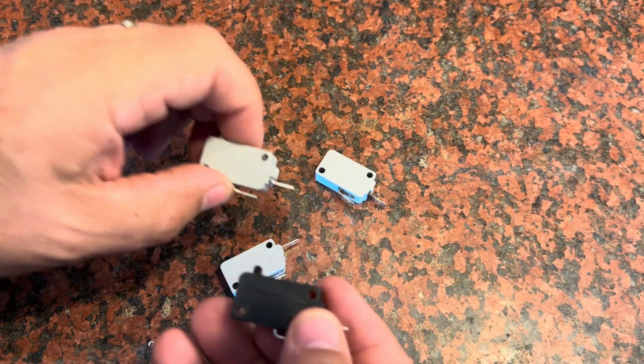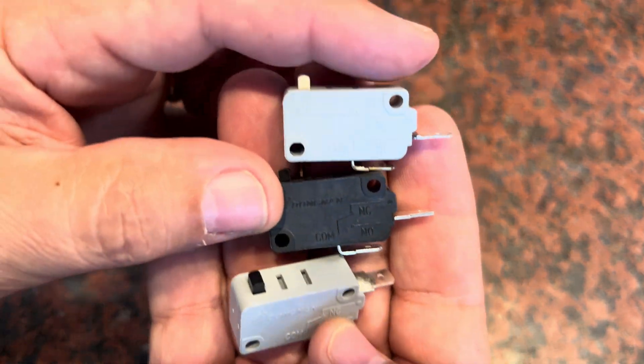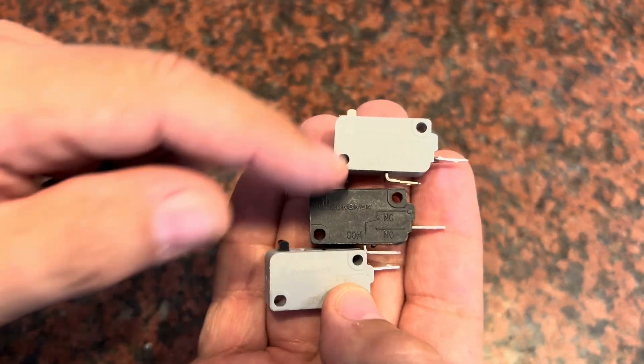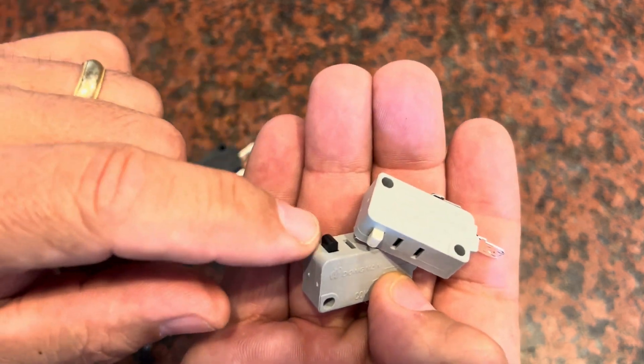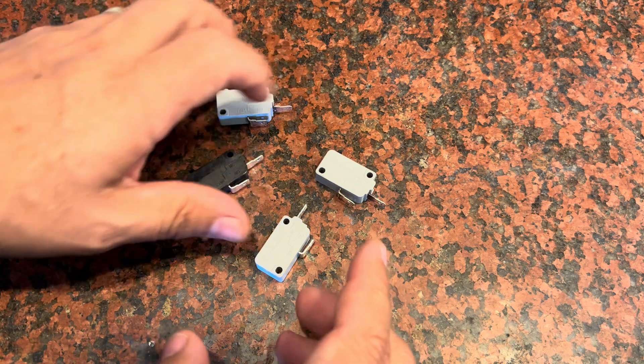But when you're replacing these sometimes it can be a little unclear so what am I dealing with, what am I replacing. You can see with these three here this one's black, these are gray. This has a black button, this has white. Well let me tell you none of that matters, none of that matters at all.